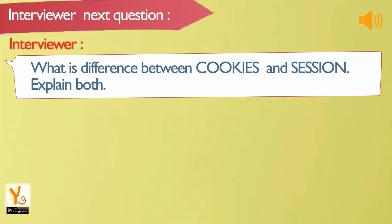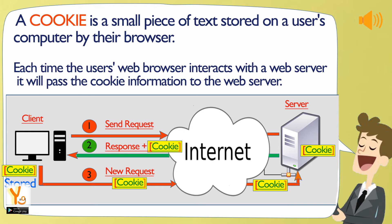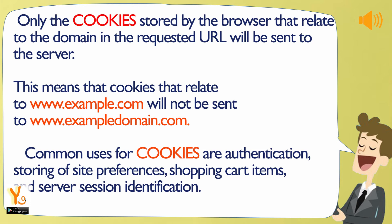What is the difference between cookies and sessions? A cookie is a small piece of text stored on a user's computer by their browser. Each time the user's web browser interacts with a web server, it will pass the cookie information to the web server. Only cookies stored by the browser that relate to the domain in the requested URL will be sent to the server. Common uses for cookies are authentication, storing site preferences, shopping cart items, and server session identification.